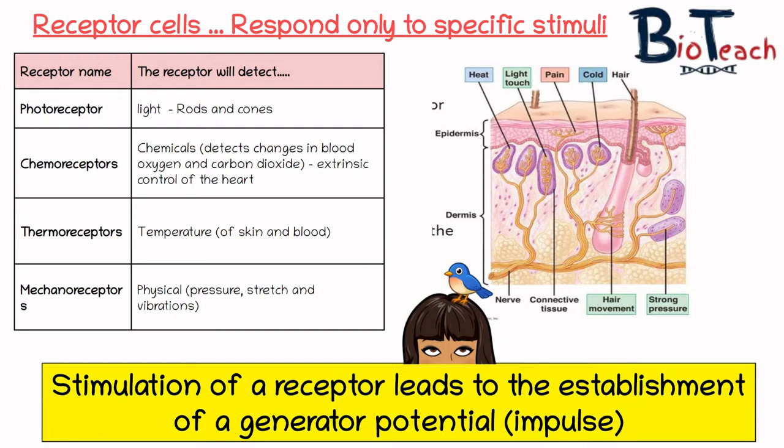It's the stimulation of these receptors that leads to the establishment of the generator potential, or the impulse I talked about earlier. With all of these receptors, when a stimulus is present it will affect ion channels in the membrane that then generates this action potential. You can go and watch my action potential video and that will make a bit more sense as to how that happens.